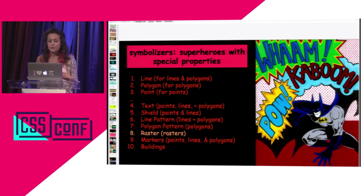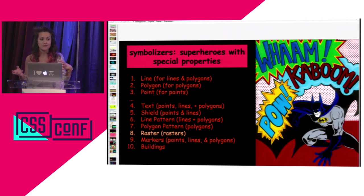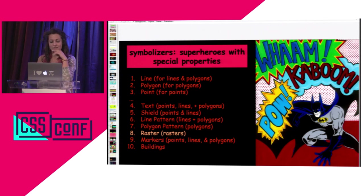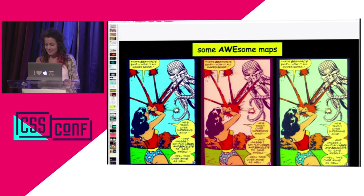Symbolizers are like superheroes with special properties — they're the things you can style in CartoCSS. You have points, lines, and polygons, as you'd expect, because that's usually what you render when plotting data on a map. But you also have text and all kinds of other symbolizers, including Raster, which I highlight because I'll be talking more about vector maps and why they're superior.